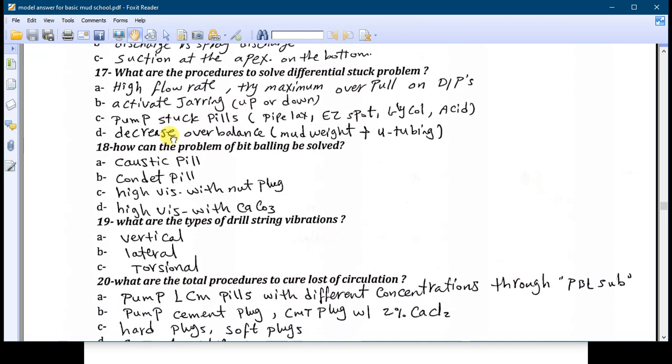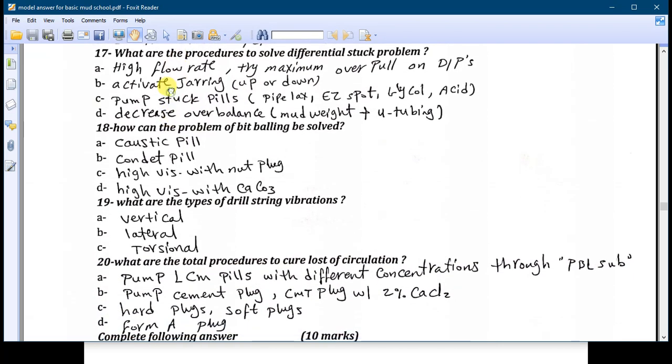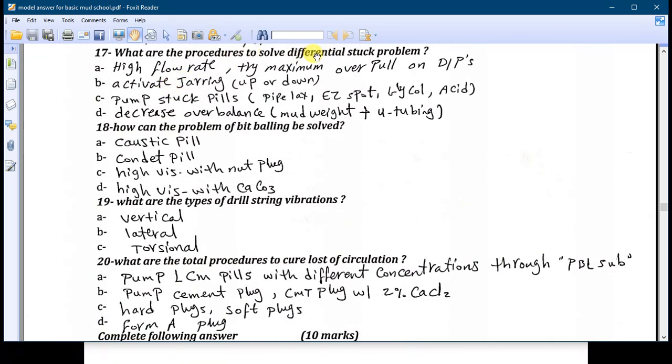Number seventeen: what are the procedures to solve the differential stuck problem? Number A: high flow rate and try with the maximum overpull on the drill pipe. Then activate the jarring up or down according to the situation. Number C: bump the stuck pill, for example the Pipe Lax or whatever you like, acid whatever. And finally to decrease the overbalance by mud weight and the lubing phenomena.